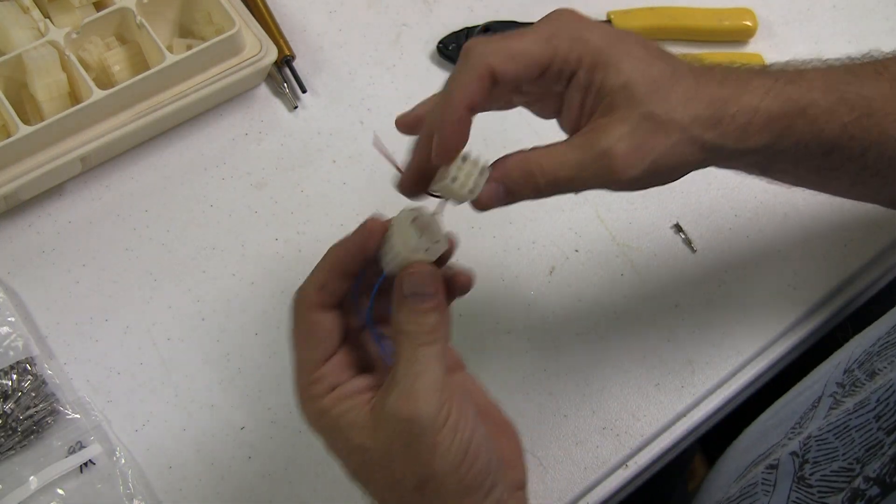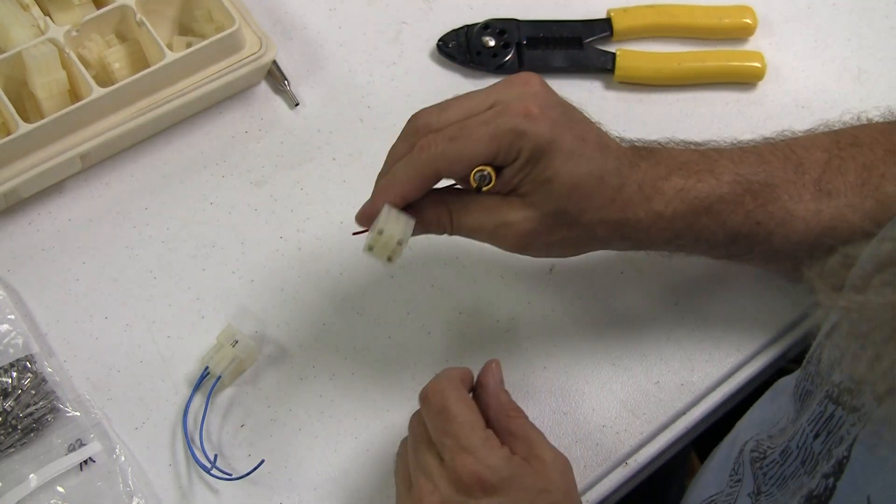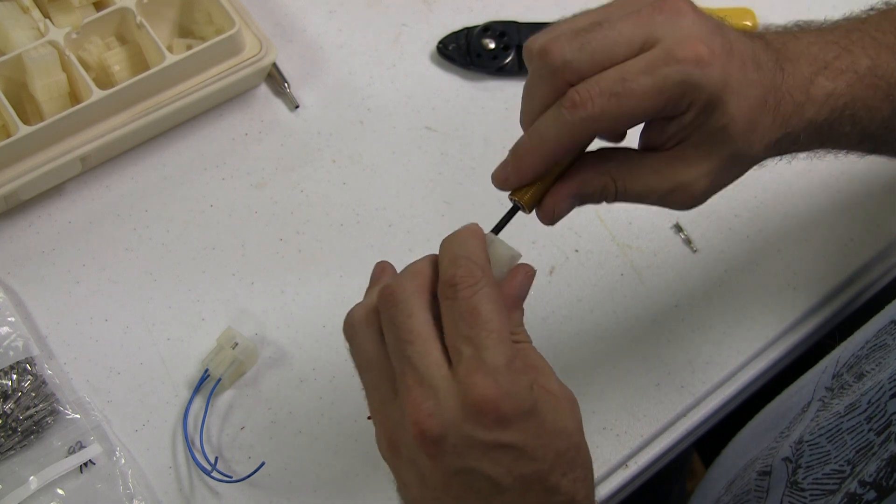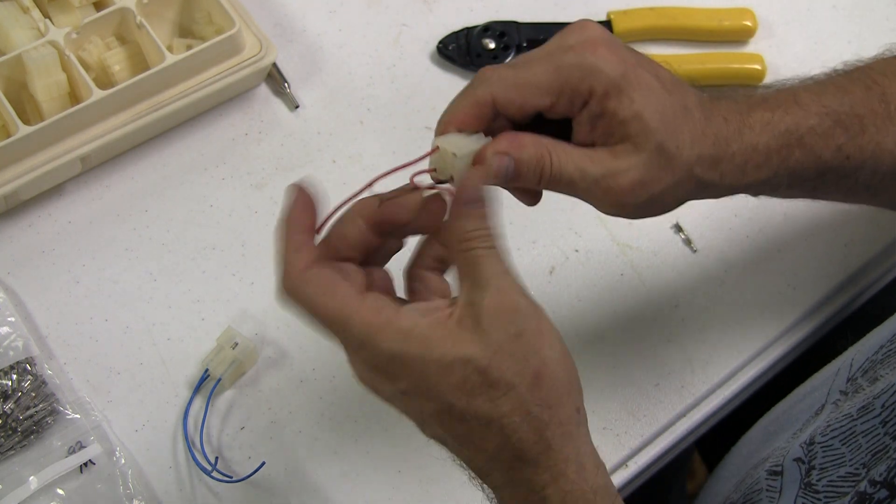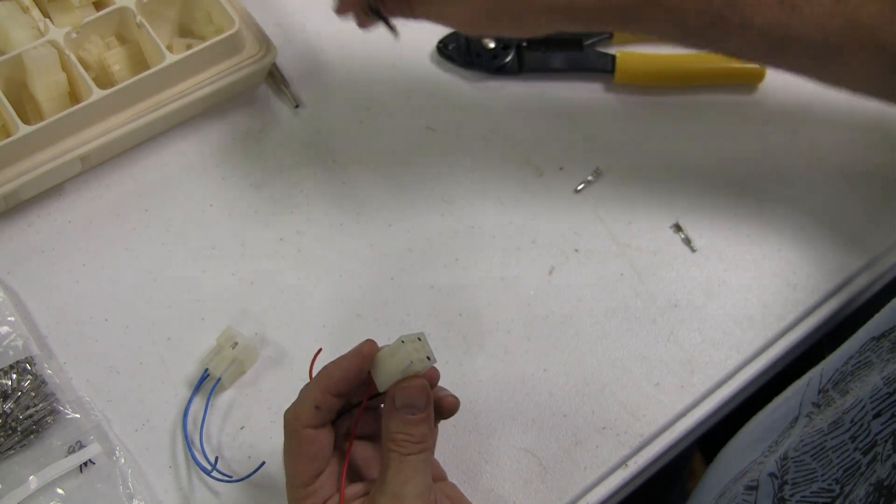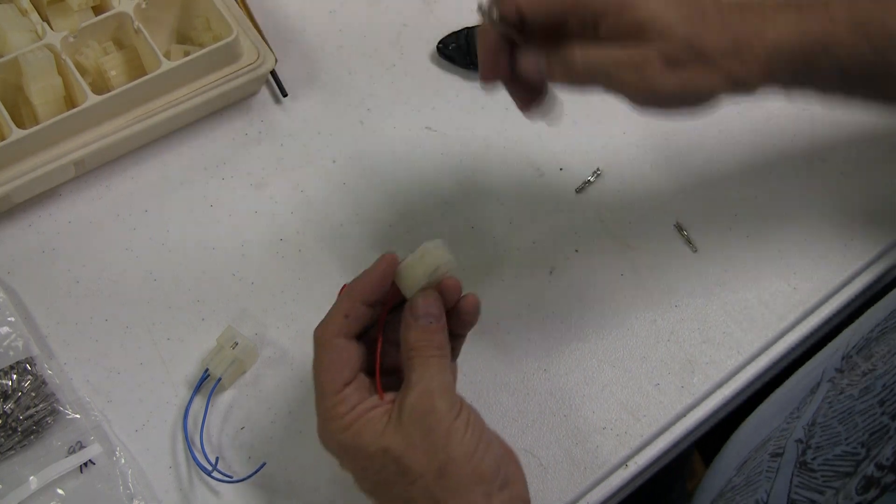Now, if you need to remove these things, there's different tools. There's a different size tool, depending upon the type of Molex connector you're using, for the inner and the outer. Now, I happen to have, I don't know if I've got the right tool for the female ones. I think this is not quite the right tool, but both of these are for the male end of the connectors, I believe.